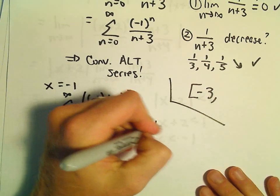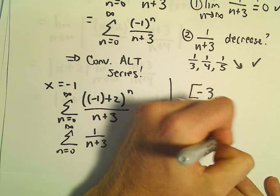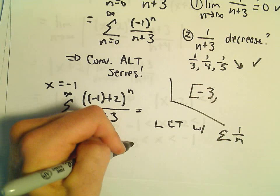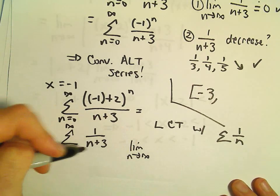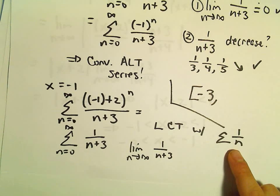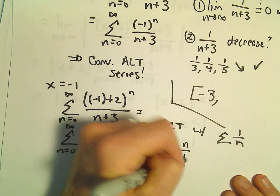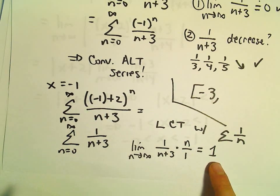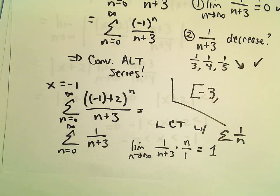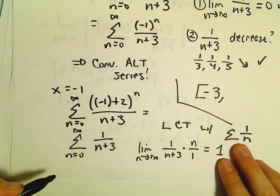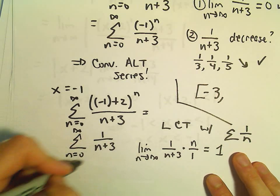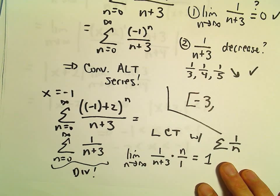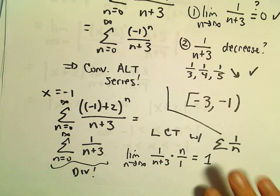We can use the limit comparison test with the series 1 over n, which is the divergent p-series. The limit as n goes to infinity of 1 over n plus 3 divided by 1 over n is the same as multiplying by n over 1, and that limit equals positive 1. A positive finite number tells us both series do the same thing. Since we compared it with a divergent p-series, this series is also divergent, so at x equals negative 1 it's divergent.